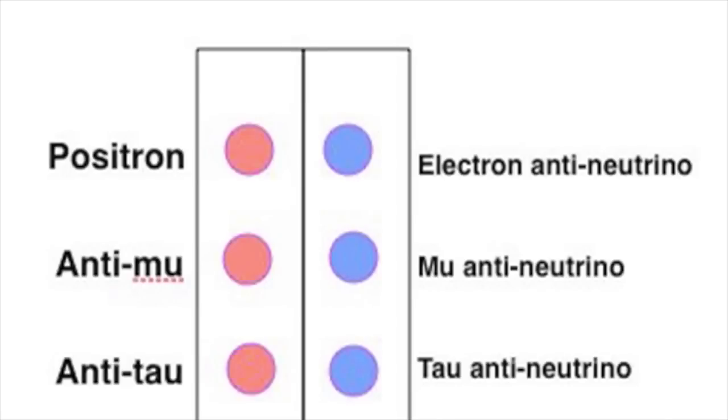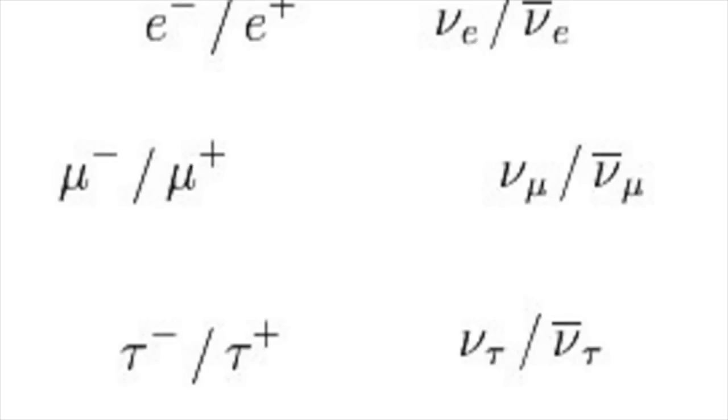We said there were six leptons or perhaps three, but in fact, we can count 12 because every particle has its anti-particle. The anti-matter electron is called the positron and it is also stable.